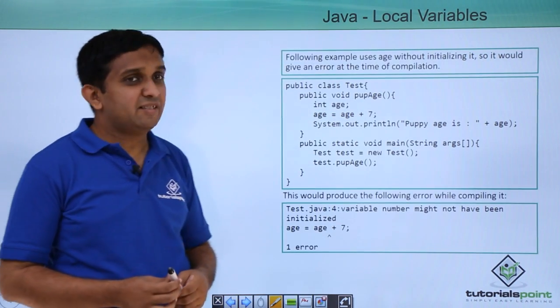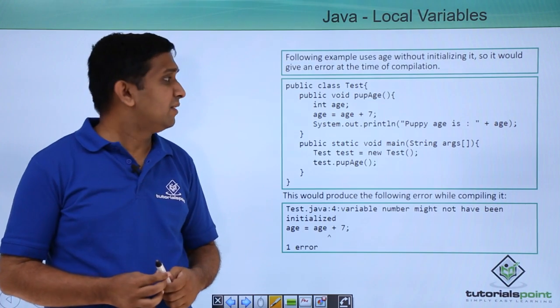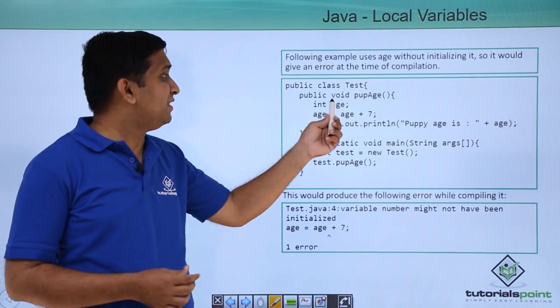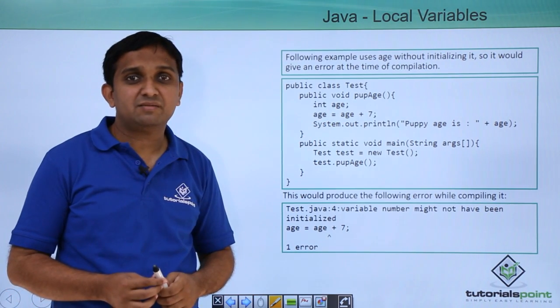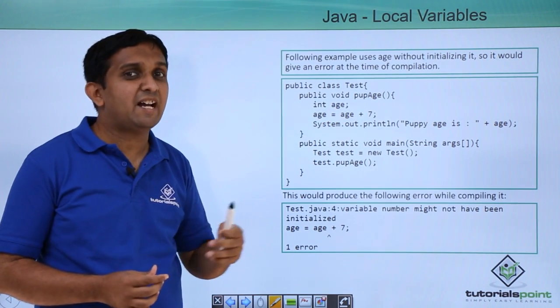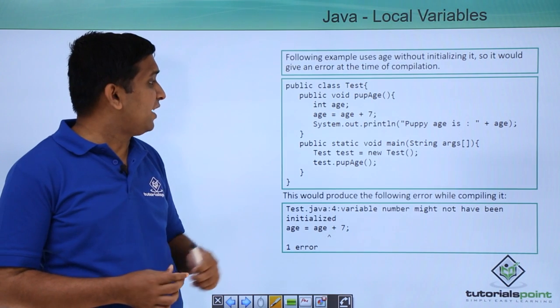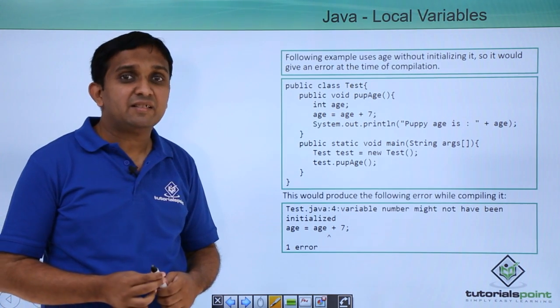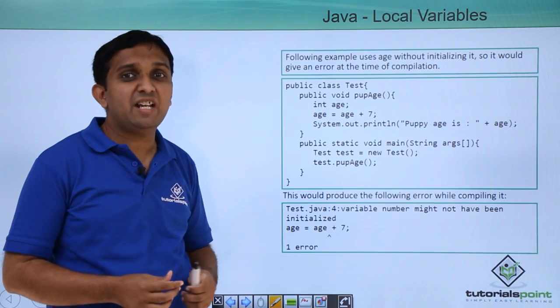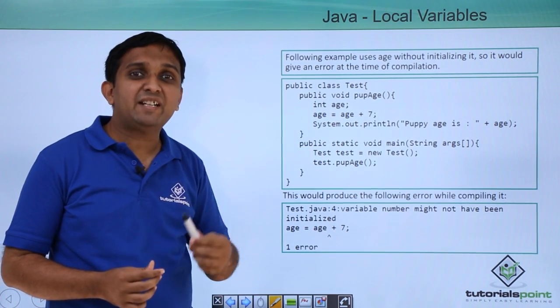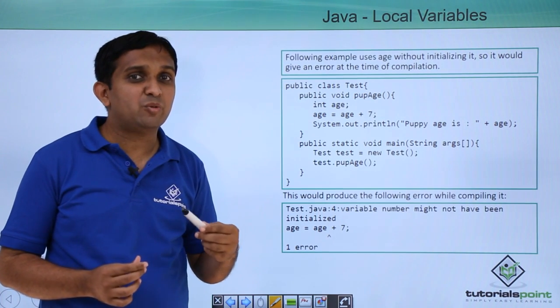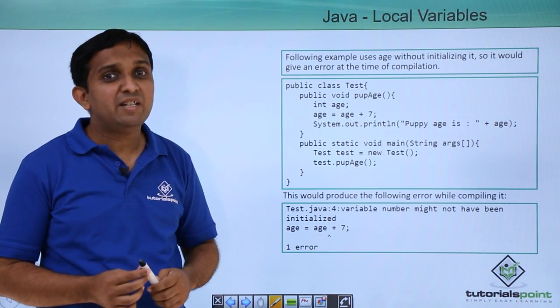Let us consider this another code snippet. Here again age is declared but when it is declared it is not initialized to some value. So it is containing garbage. So if you try to compile this code it will throw error regarding initialization of this age variable. So you need to take care that when you write a program, if you are using some local variable in your program that should have some value inside that.